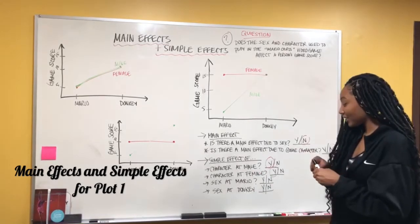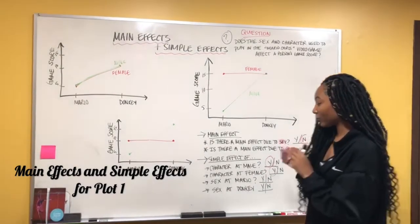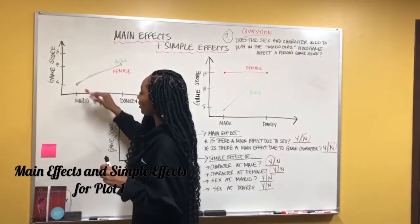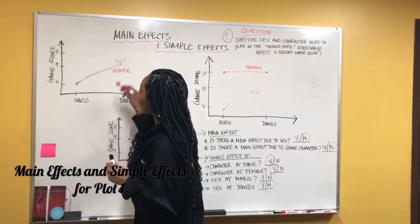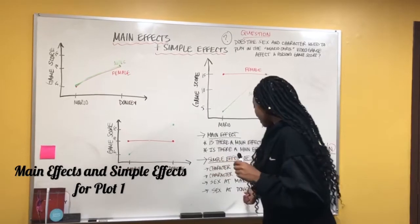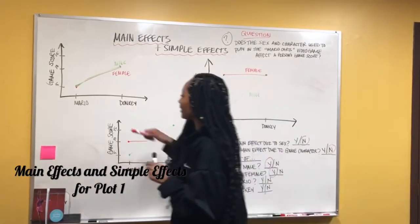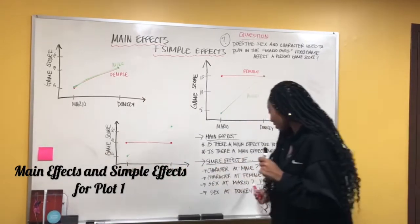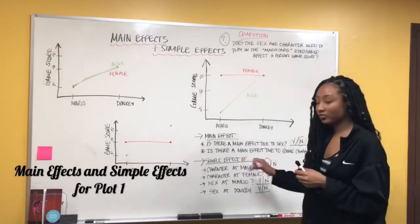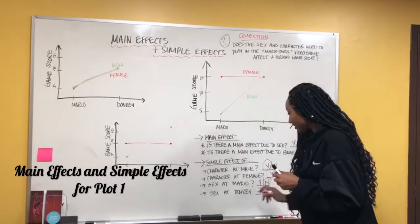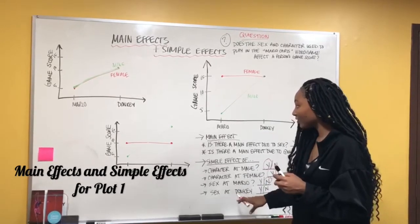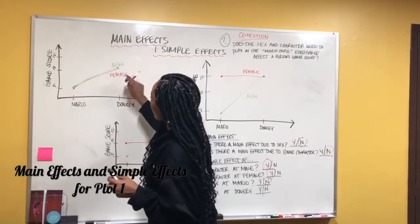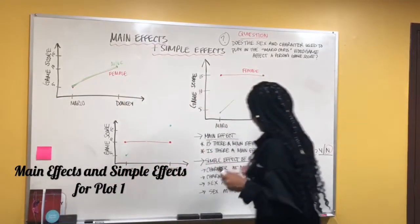Now lastly, sex at Mario. We're going to look at them individually. Sex at Mario — we're going to say no, because if there were a simple effect of sex at Mario we'd see a difference between the sexes, but we don't. So sex at Mario is no for a simple effect. And for sex at Donkey it's also no because the sexes don't vary, so there is no simple effect there either.